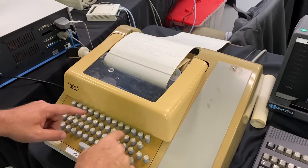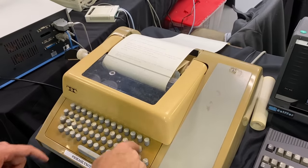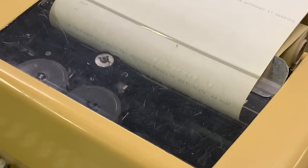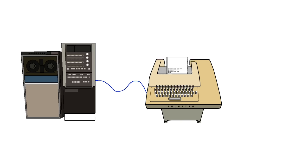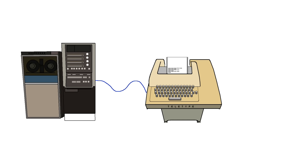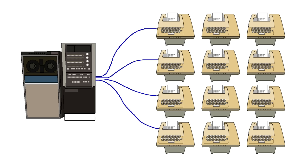For decades, people used teletypes to type commands to a computer, and the computer would return the output by printing to paper. These teletype machines could be in the same room with the computer, or in another part of the building, or could even use a modem to connect to the computer off-site. Some computers were single-user systems with a single teletype, whereas larger computers could be multi-user and thus have multiple teletypes connected.